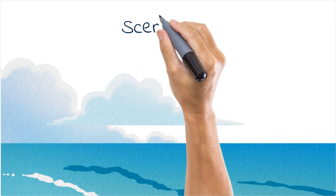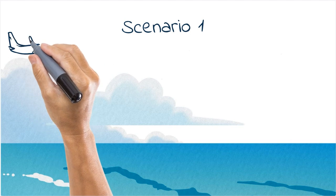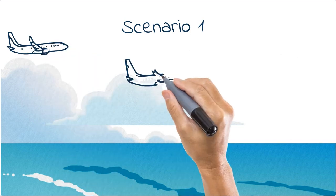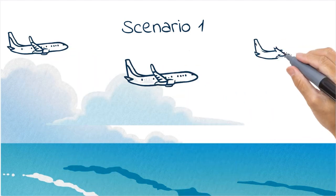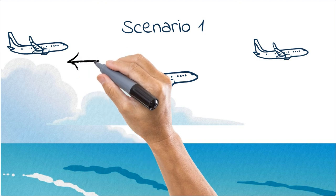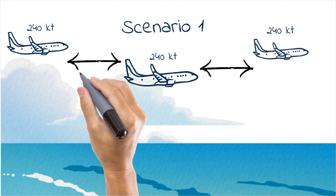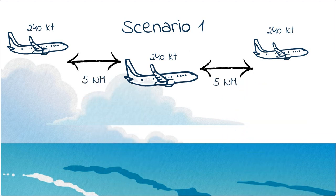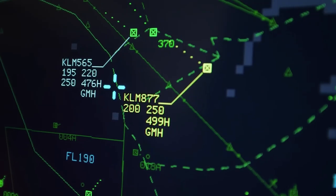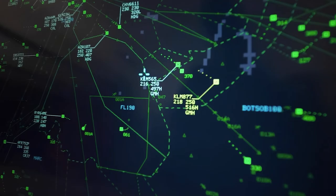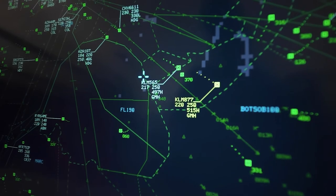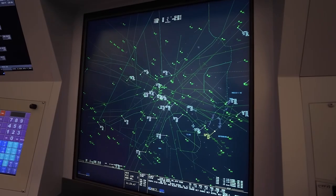One of the main scenarios where we need speed control is to maintain distances between two or more aircraft. This is done by assigning the same speeds to all aircraft. For example, by instructing pilots to fly at an indicated airspeed of 240 knots, the gap between the aircraft will stay constant if they are flying roughly at the same altitude. This is a common situation when controllers must make the traffic flow run smoothly like a train, making it more predictable and easier to manage.